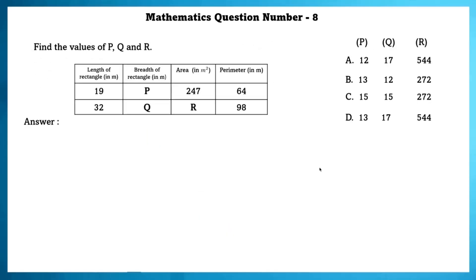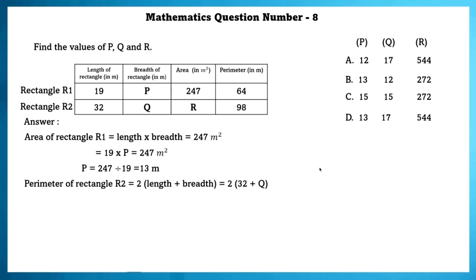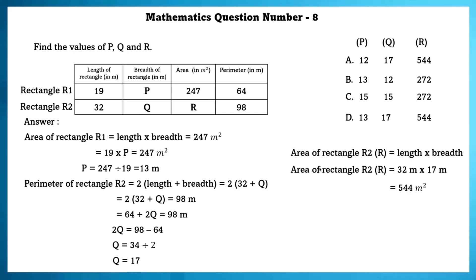Mathematics question number 8. Find the values of P, Q, and R. Area of rectangle 1 = length × breadth = 247 m². We don't know the breadth, but using the known length, we find the breadth is 13 meters. Perimeter of rectangle 2 = 2 × (32 + Q), from which we find Q = 17. Area of rectangle 2 = length × breadth, and since we know both, the answer is 544 m².